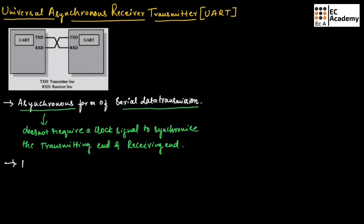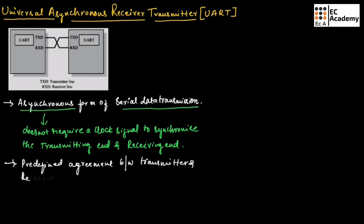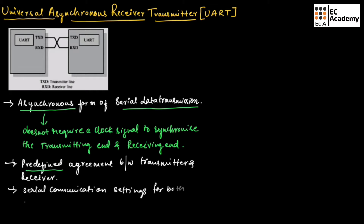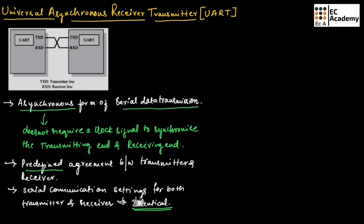Instead, it requires a predefined agreement between transmitter and receiver, which means the serial communication settings for both transmitter and receiver should be identical. These serial communication settings include baud rate, number of bits per byte, parity, number of start bits, and number of stop bits.